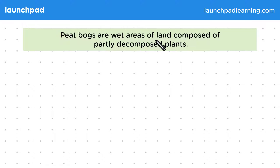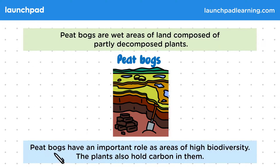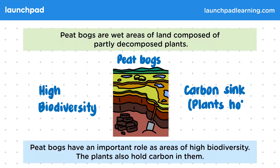Peat bogs are wet areas of land composed of partly decomposed plants. This diagram shows a peat bog. Peat bogs have an important role as areas of high biodiversity. The plants also hold carbon in them. Remember that high biodiversity is important to create more stable communities, and plants holding carbon is also referred to as a carbon sink.